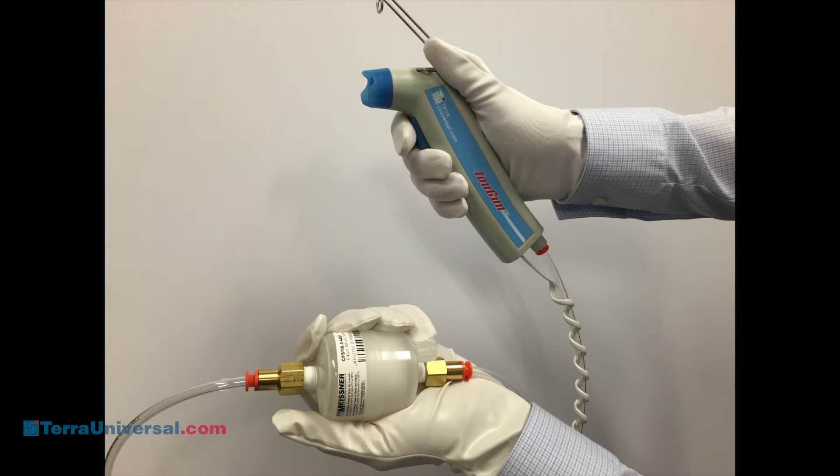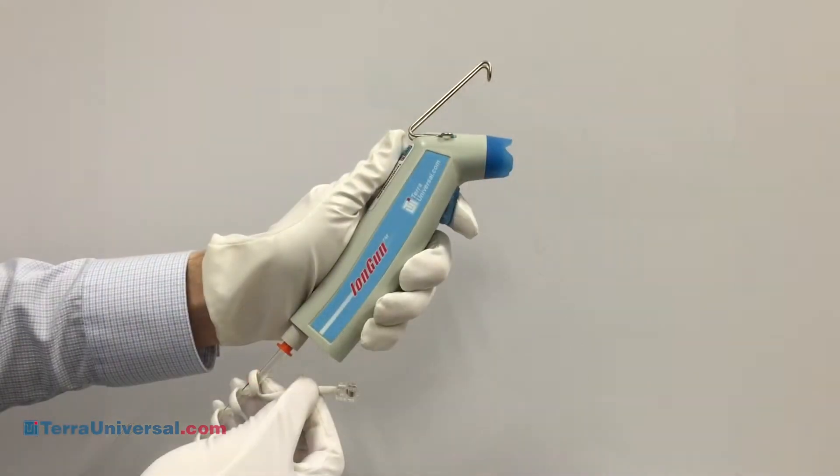The ionizing gun operates using either clean, dry air or nitrogen gas, which first passes through the provided inline filter.